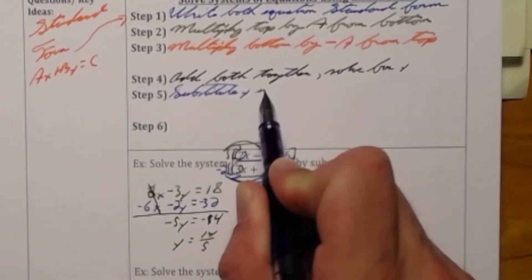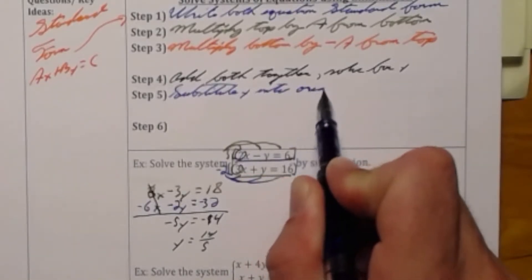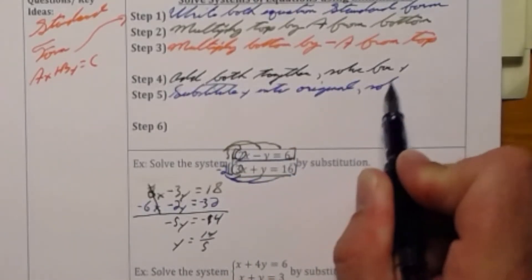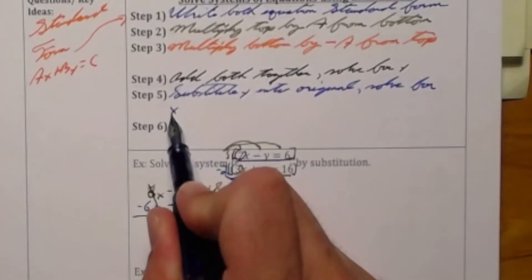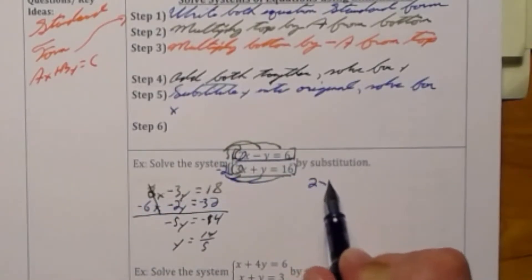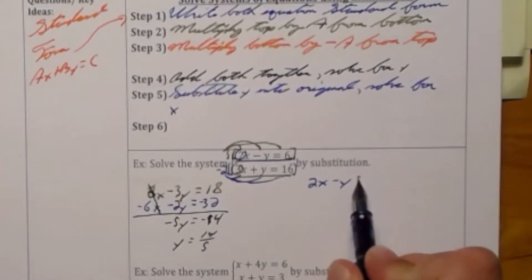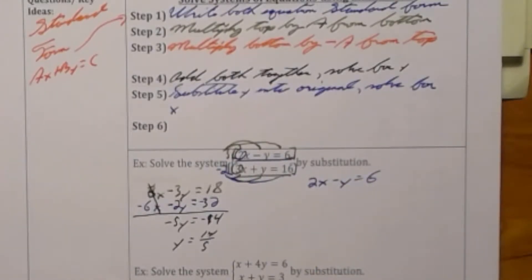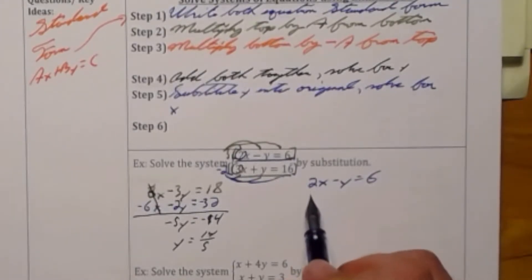Having found y I need to substitute y into an original equation and solve for x. I'm going to substitute y into the top equation to get 2x minus 14 over 5 is equal to 6.